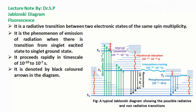Fluorescence is a radiative transition between two electronic states of the same spin multiplicity. It is the phenomenon of emission of radiation when there is a transition from a singlet excited state to the singlet ground state. It proceeds on a timescale of 10 to the power minus 10 to 10 to the power minus 7 seconds and is denoted by black colored arrows in the diagram.